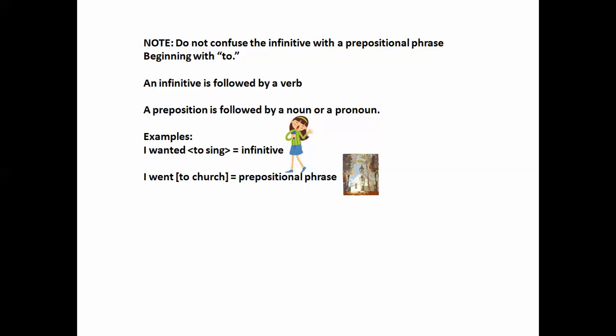Note, do not confuse the infinitive with a prepositional phrase beginning with to. An infinitive is followed by a verb. A preposition is followed by a noun or a pronoun. So for instance, I wanted to sing. Sing is a verb, so that's an infinitive. I went to church. Church is a noun, so that is a prepositional phrase. So you can tell what it is after you find the word to by checking the word that follows. If it's a verb, it's an infinitive. If it's a noun or pronoun, it's a prepositional phrase.